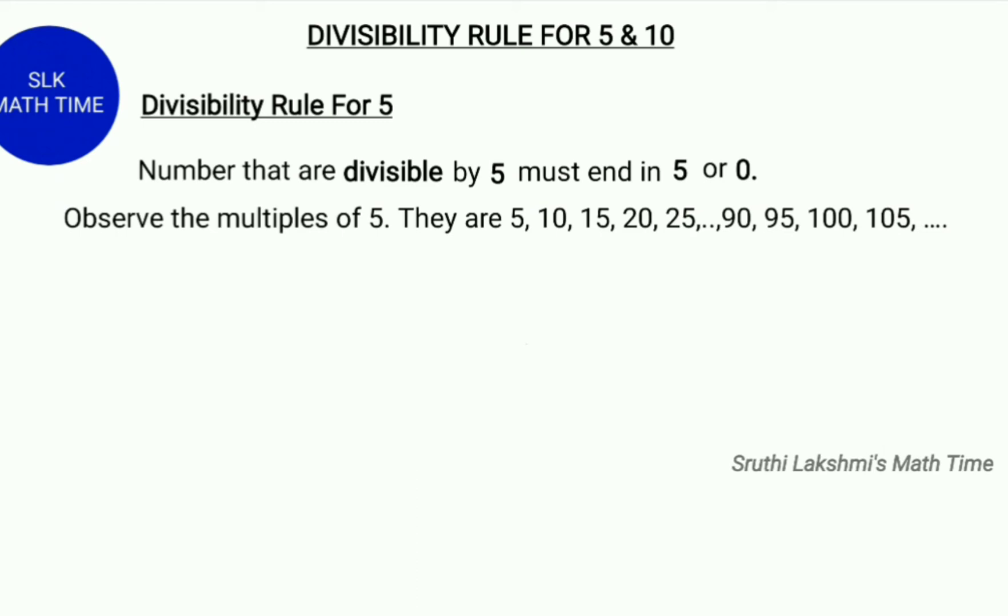First, let's see the divisibility rule for 5. A number that is divisible by 5 must end in 5 or 0.